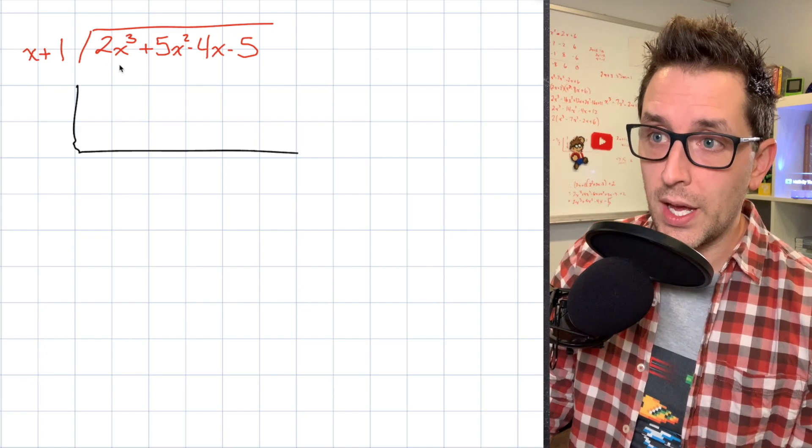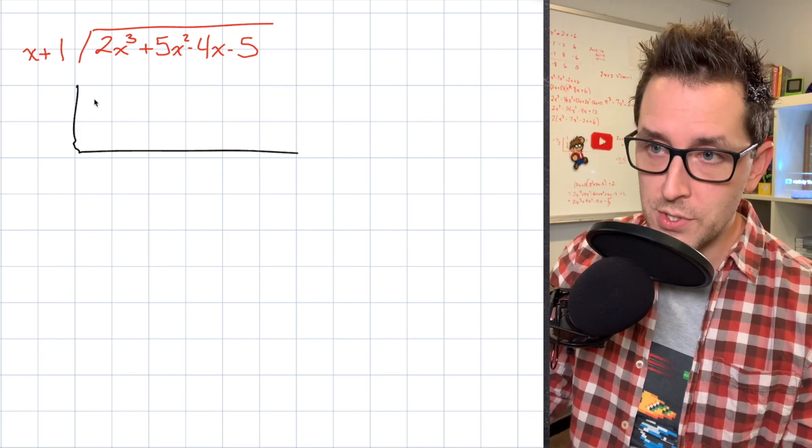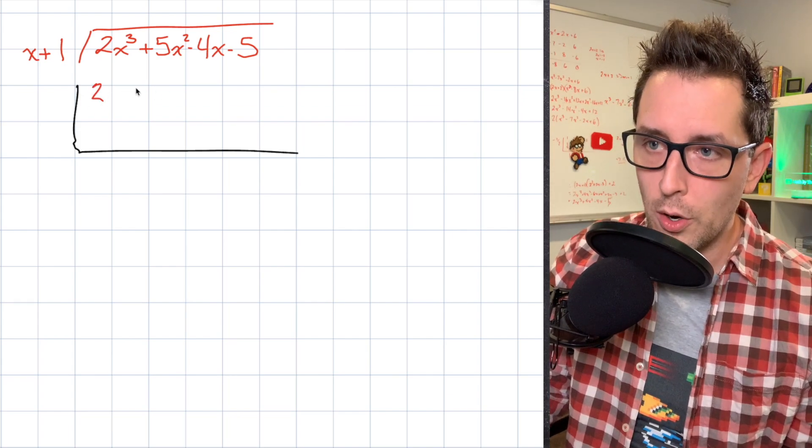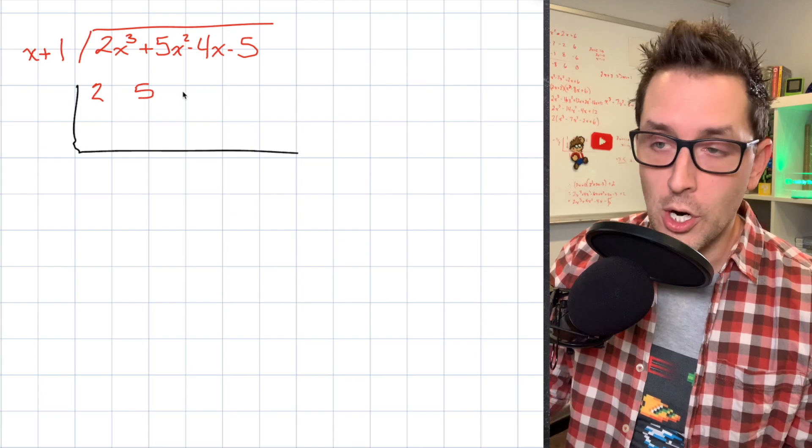So in this case, we have 2, 5, negative 4, and negative 5. And I'm just going to take those coefficients, and I'm just going to write them in the top row of my little L bracket chart thing.